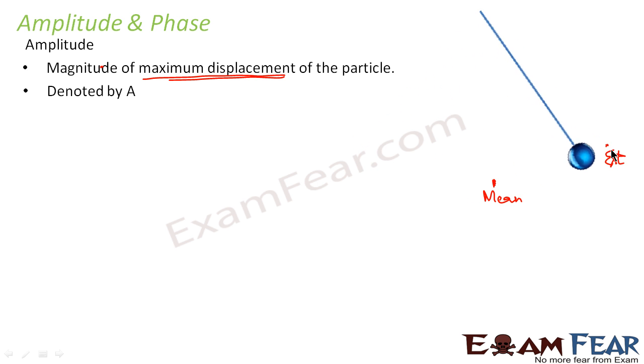This is the extreme position. So if you see here, this is the maximum displacement from the main position. So this displacement or this maximum displacement is referred to as amplitude. That is, the maximum displacement from the main position is known as amplitude.